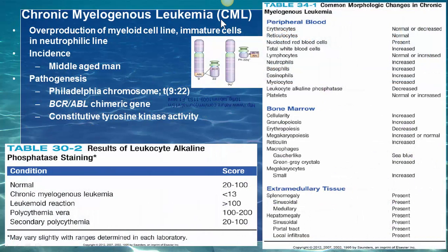CML, or chronic myelogenous leukemia, is the expansion and overproduction of the myeloid cell line with a preponderance of immature cells in the neutrophilic line. It most commonly occurs in middle-aged men. It is caused by a mutation called the Philadelphia chromosome, formed by a reciprocal translocation between chromosome 9 and 22.